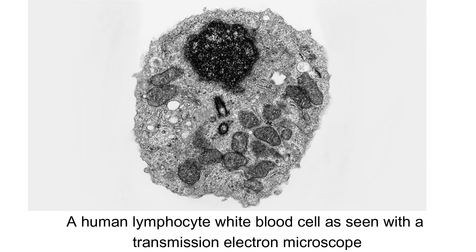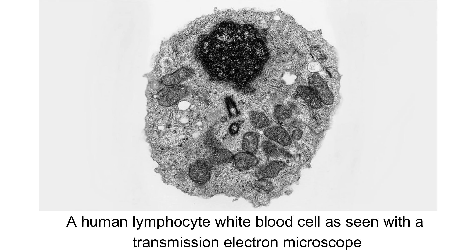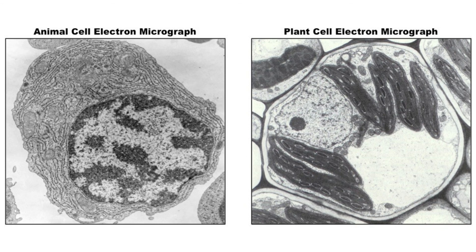Now, check this image. It is a picture of a human lymphocyte white blood cell as seen with a transmission electron microscope. These two are images of a plant cell and an animal cell under an electron microscope.